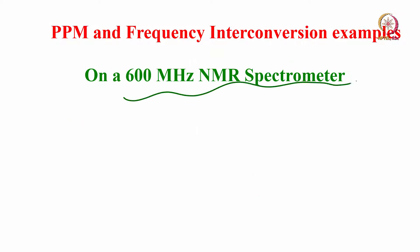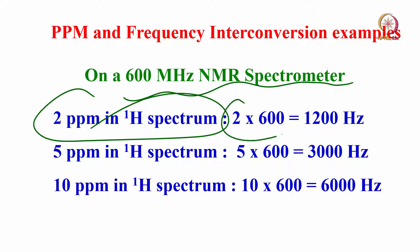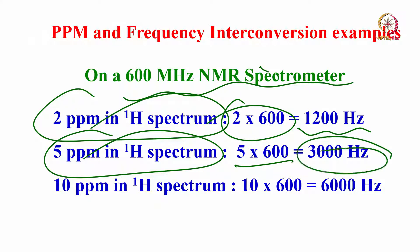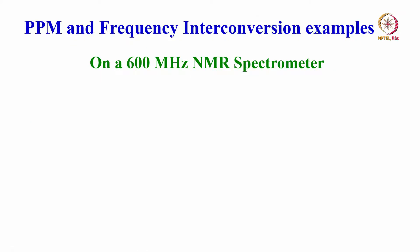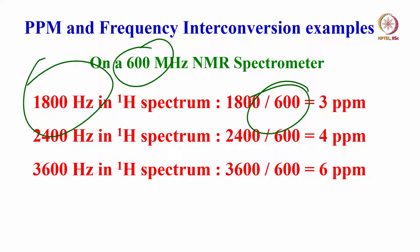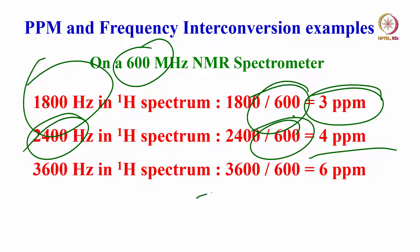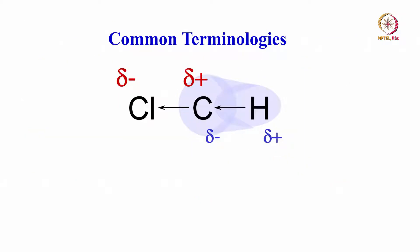On a 600 MHz NMR spectrometer: 2 ppm for proton is 2 × 600 = 1200 Hz; 5 ppm is 3000 Hz; 10 ppm is 6000 Hz. For frequency to ppm conversion, if a peak is at 1800 Hz at 600 MHz, divide 1800 by 600 to get 3 ppm. Similarly, 2400 Hz divided by 600 gives 4 ppm. To convert ppm to frequency, multiply by the resonating frequency; to convert frequency to ppm, divide by the resonating frequency.